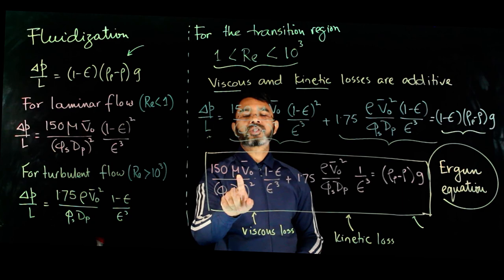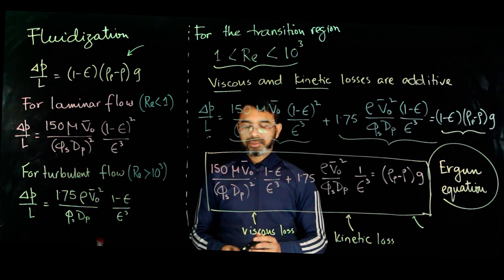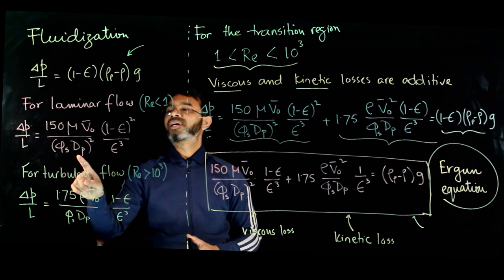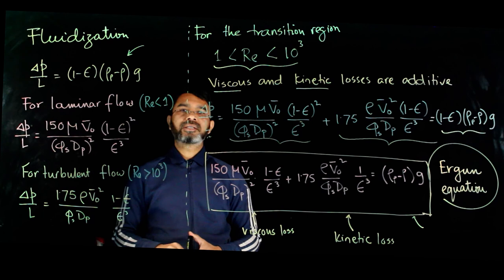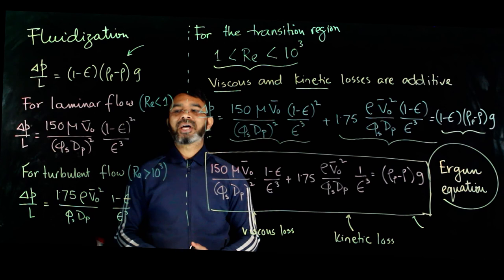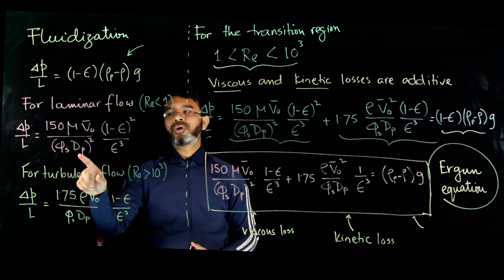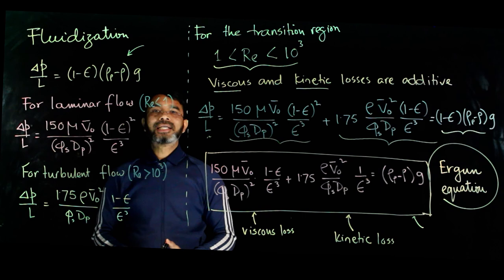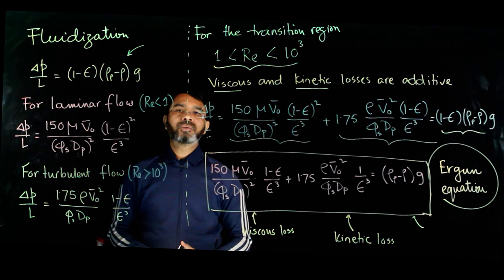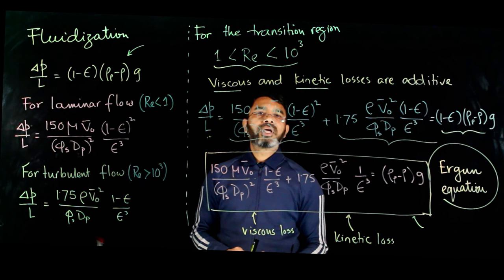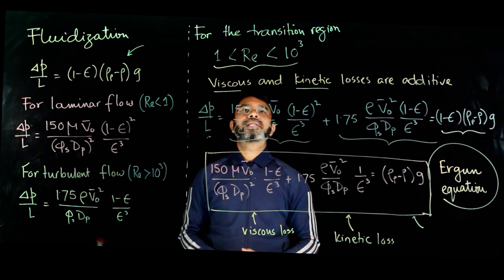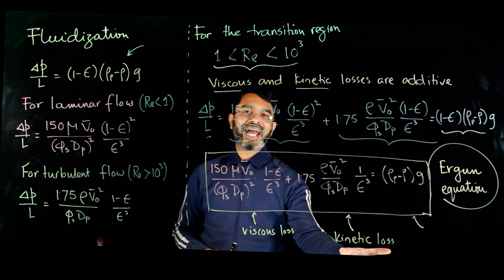For laminar flow, ΔP is inversely proportional to d_p², meaning smaller particles cause a much higher pressure drop. Since one purpose of a fluidized bed is to enhance heat and mass transfer — which requires more surface area and smaller particles — there must be a balance between desired area and tolerable pressure drop. The Ergun equation is the general equation for fluidization; for purely laminar or turbulent flow, use only the respective term, as adding both would give erroneous results.